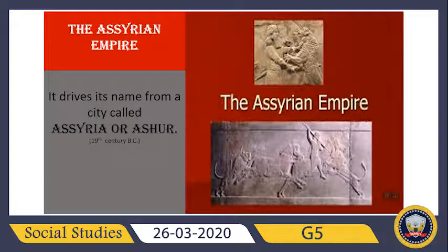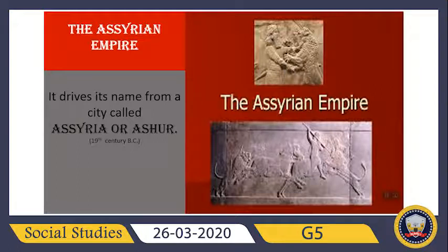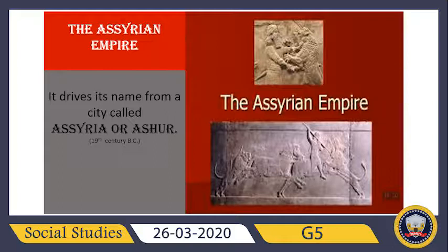First, we will talk about the name of the Assyrian Empire. The Assyrian Empire derives its name from a city called Assyria, or Usher. These are the names of the cities from which this empire took its name. It was developed on the west bank of the Tigris River, and with the passage of time these cities turned into a strong empire in the 19th century.